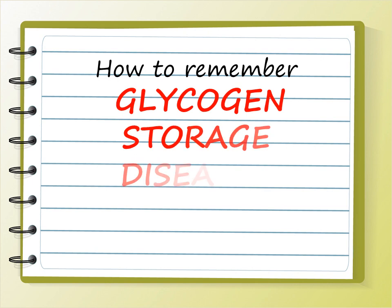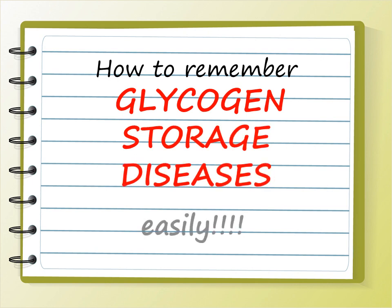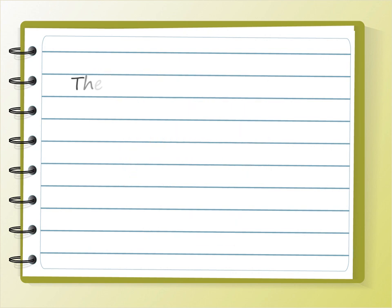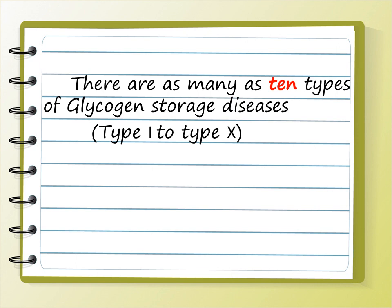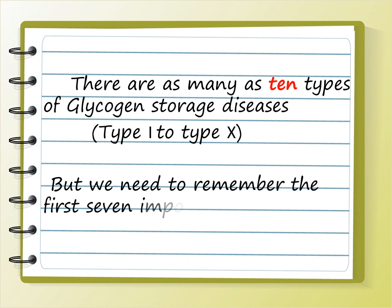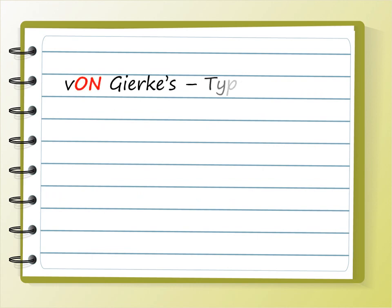Hello everyone, this is Dr. Vishwas, and today I am going to teach you how to remember glycogen storage diseases easily. There are as many as 10 types of glycogen storage diseases, ranging from type 1 to type 10 in Roman numerals, but we don't have to remember all 10 types — we need to remember the initial top seven important ones.